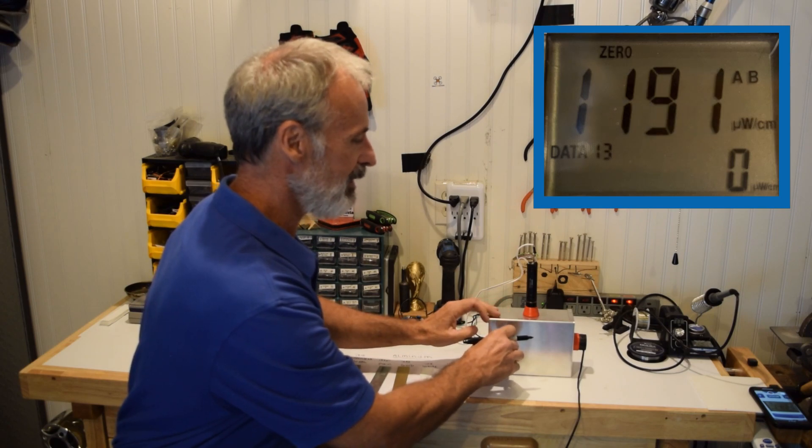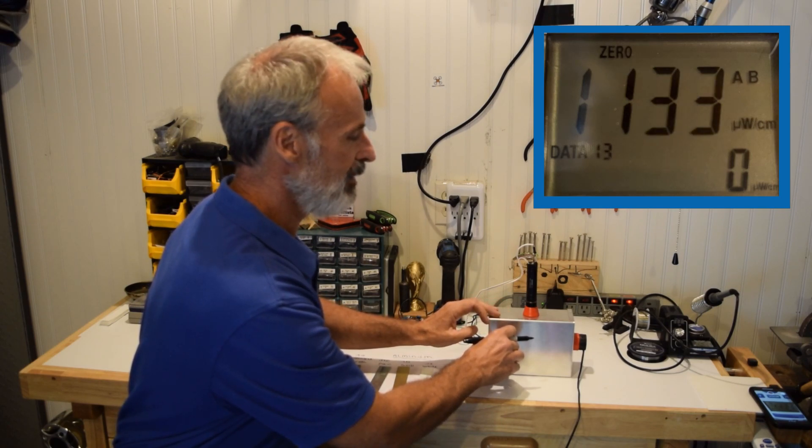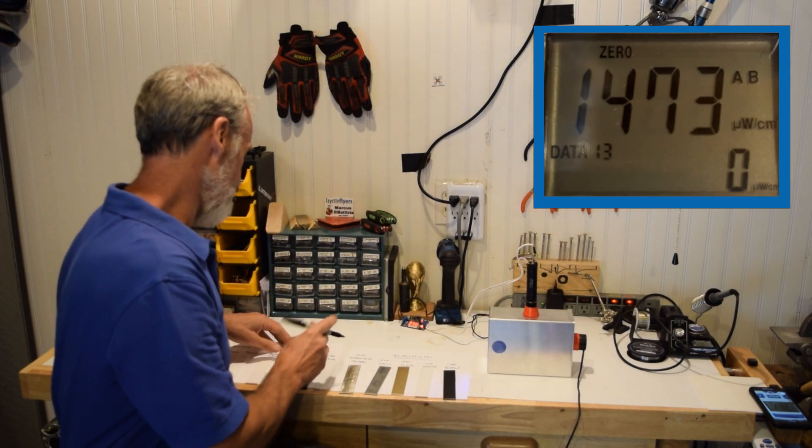So here's black ABS. 1,135. So you can see it's a little bit worse.